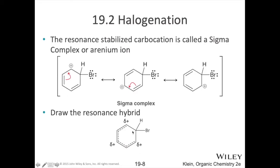Here's a picture of our sigma complex. You can see how that resonant stabilization spreads that positive charge around the ring and therefore makes that sigma complex relatively stable. Here's a picture of the hybrid structure showing how that positive charge is partially spread out throughout the whole ring.